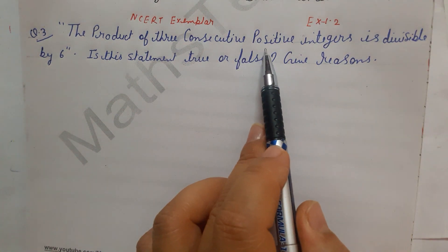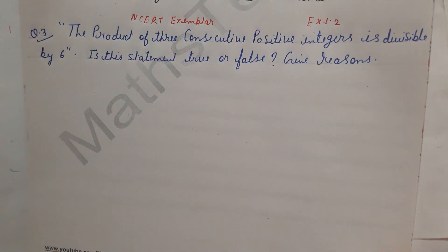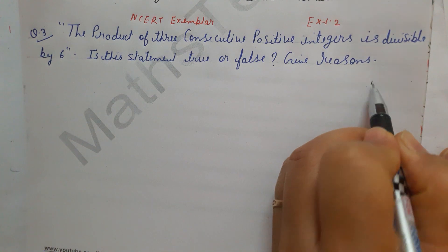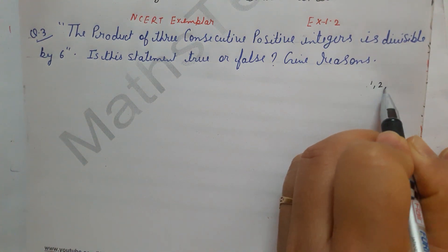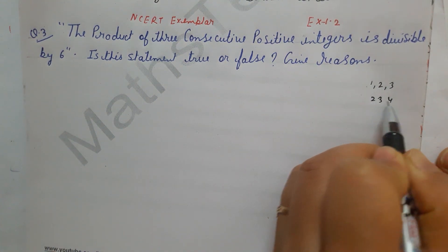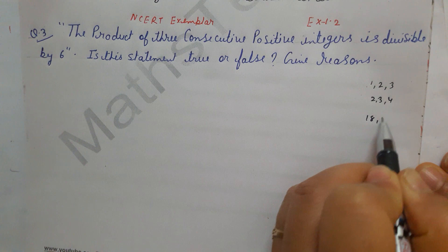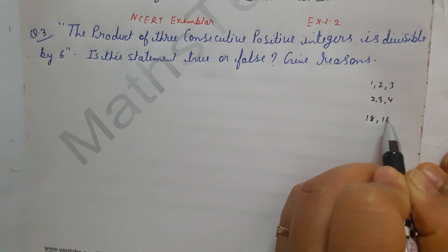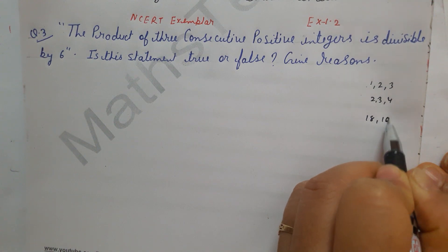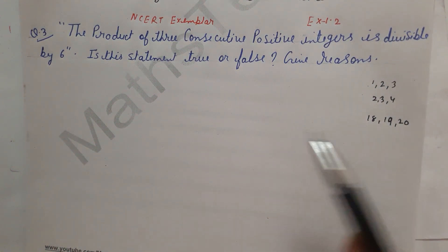What are 3 consecutive positive integers? These are 3 continuous numbers — like 1, 2, 3 or 2, 3, 4 or 18, 19, 20. So this is what we mean by consecutive numbers.